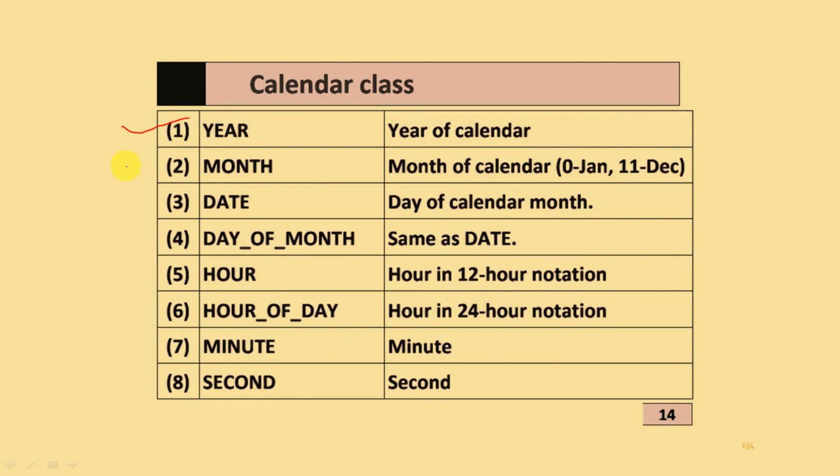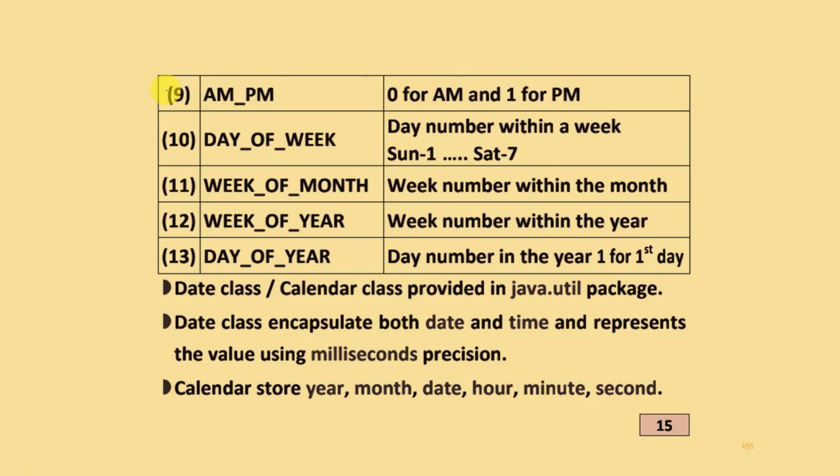Calendar class uses: year, month, date, date of month, hour, hour of day, minute, and second. Also includes AM, PM, day of week, week of month, week of year, and day of year. Date class or calendar class is provided by using java.util package.